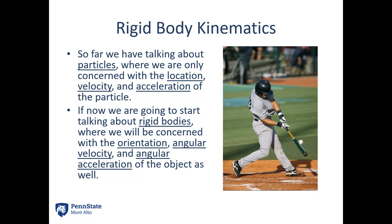An example of this: we might treat the baseball in this picture like a particle. We're worried about its velocity, its acceleration, its position, but the orientation of the baseball doesn't really matter. The baseball bat, on the other hand — the angular acceleration and angular velocity of that baseball bat are going to be very important to the problem. That one we would treat like a rigid body, almost certainly.